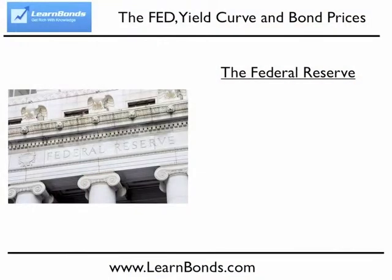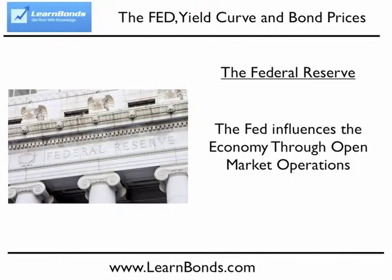The Federal Reserve has a humongous influence over interest rates in the economy. One of the primary tools they use is open market operations. This is where the Fed buys and sells short-term treasuries in order to raise or lower the interest rates that banks charge to lend each other money overnight.